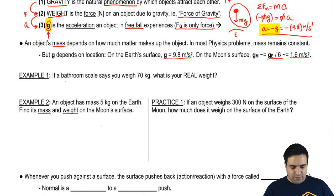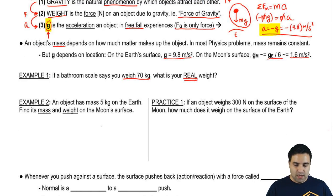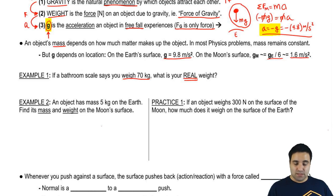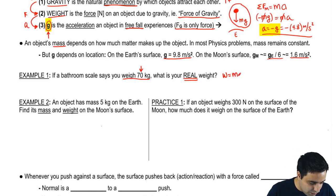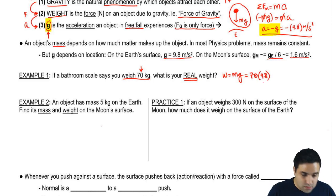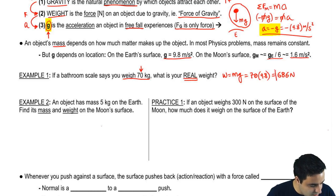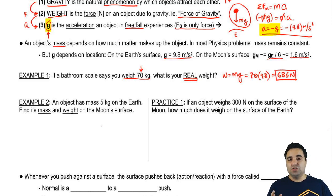If the bathroom scale says you weigh 70 kilograms, what is your real weight? It's important to realize that bathroom scales don't really measure your weight — they measure your mass, or at least that's what they show you. Your real weight is mg. You're on Earth, so it's 70 times 9.8, and the answer is 686 newtons. The scale is calibrated to show your mass even though it's technically measuring your weight.